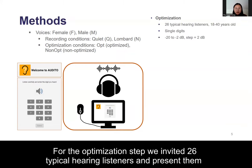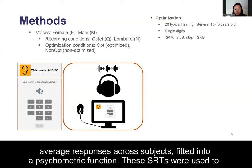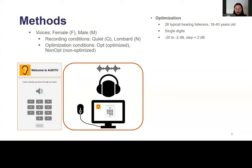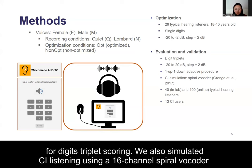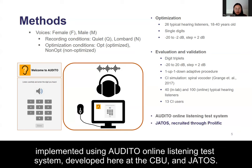For the optimization step, we invited 26 typical hearing listeners and presented them with single digits at different SNR levels. The digit-specific SRTs were derived from average responses across subjects fitted into a psychometric function. These SRTs were used to equalize intelligibility across digits within each combination of voice and recording conditions. For the evaluation and validation of the DIN test, we employed an adaptive procedure for digit triplet scoring. We also simulated CI listening using a 16-channel spiral vocoder with simulated current spread at minus 16 dB per octave. These procedures were implemented using the auditory online listening test system developed at the CBU and JATOPS.